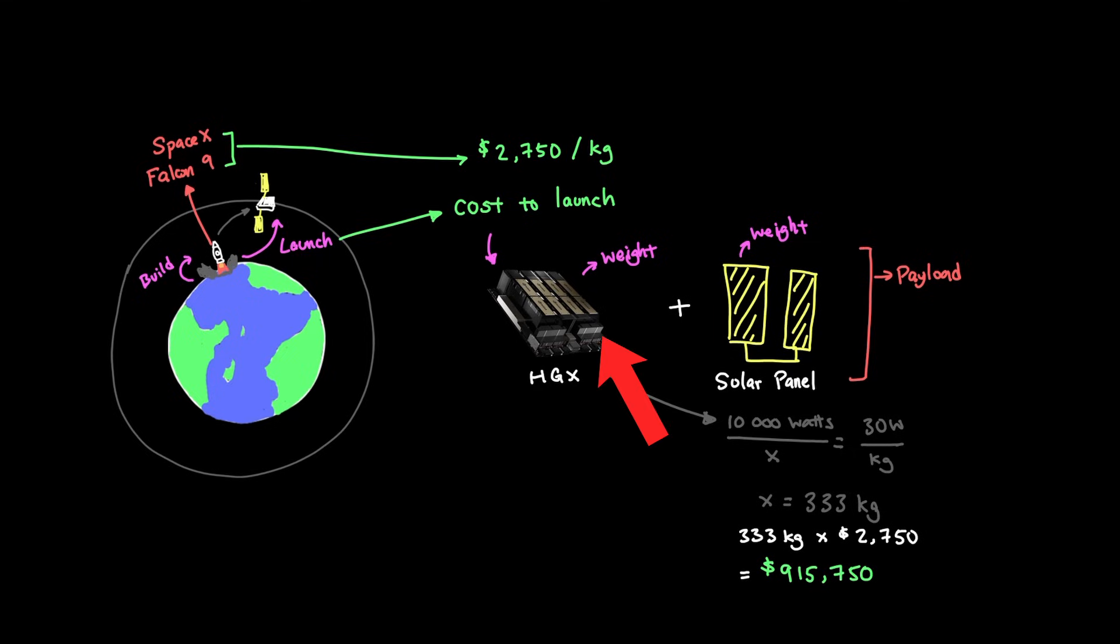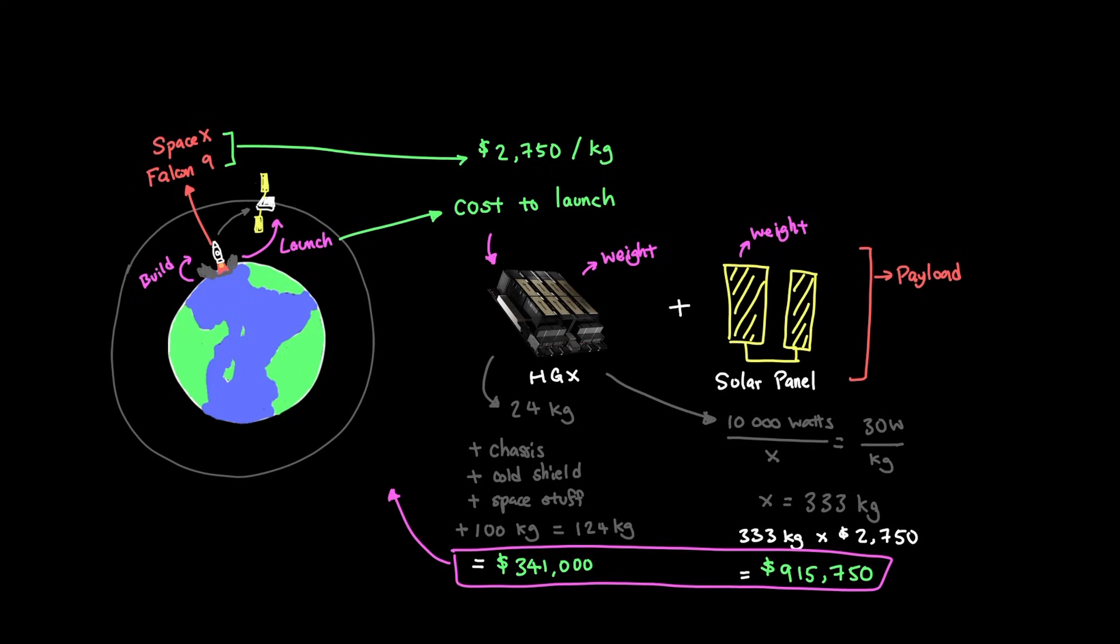Now we have to factor in the cost of the HGX unit as well, which is technically 24 kilograms. But we need to also add in the weights of chassis, cold shields, and other spacey stuff that's honestly beyond my comprehension. So let's throw in a conservative amount at 100 kilograms additional weight. So altogether, 124 kilograms for our entire compute module. And the cost to launch our compute module alone is $341,000. And now the total cost to launch the solar panel and the compute module is $1.3 million. And you might be looking at this $1.3 million price tag, and your first question might be this: How does this $1.3 million compare to the cost of energy here on Earth?